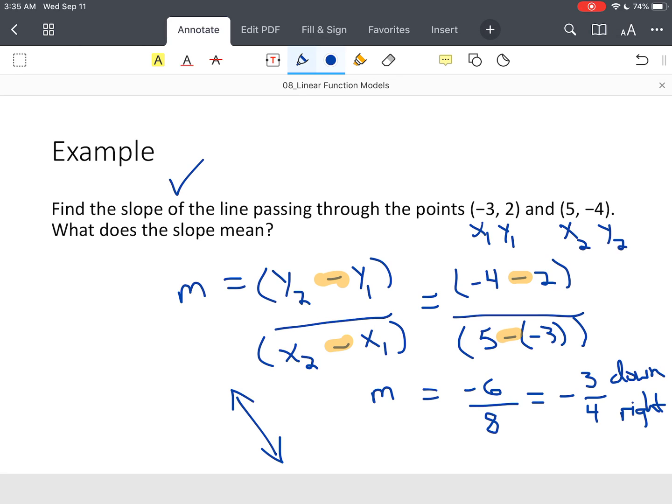Now, with this negative, it could potentially mean for every three units that I move up, I move four units to the left. So it's the exact same thing. You can either go down and right, or you can go up and left.